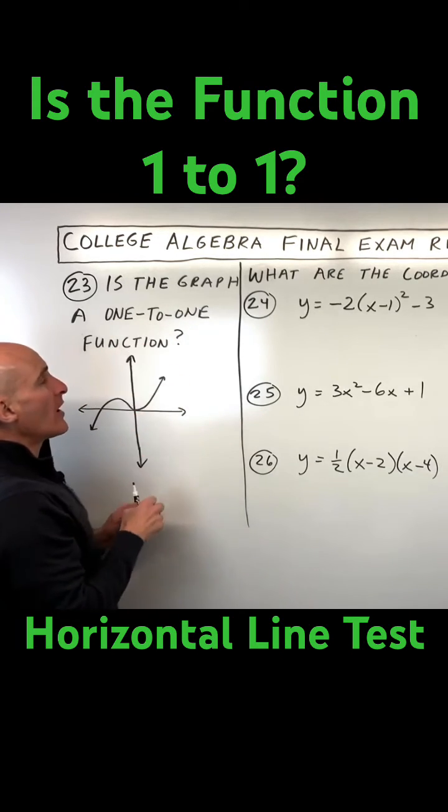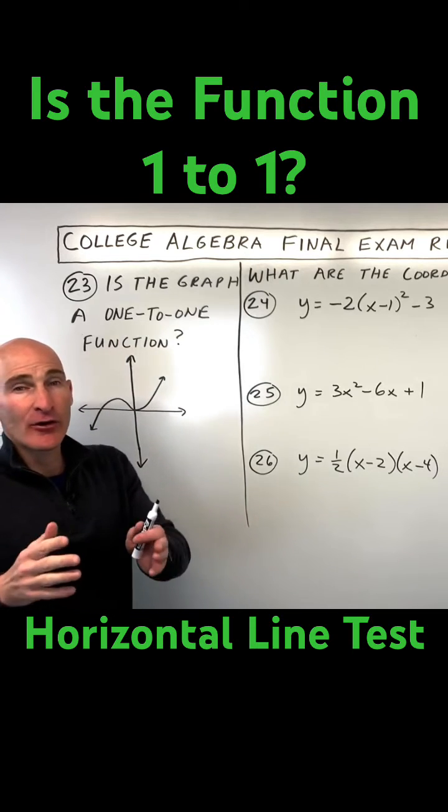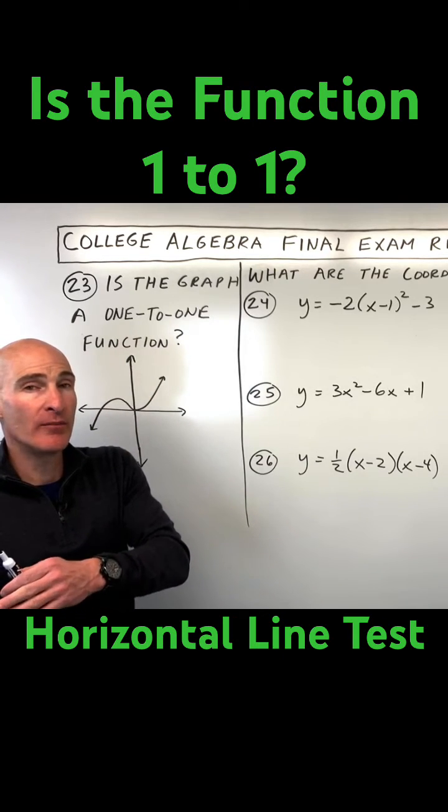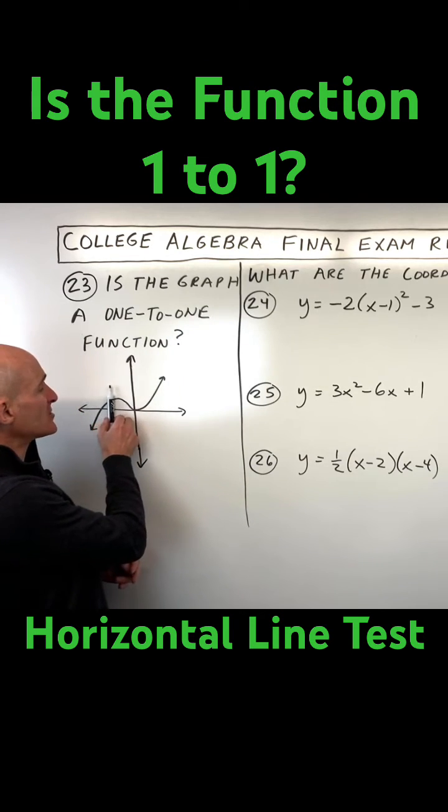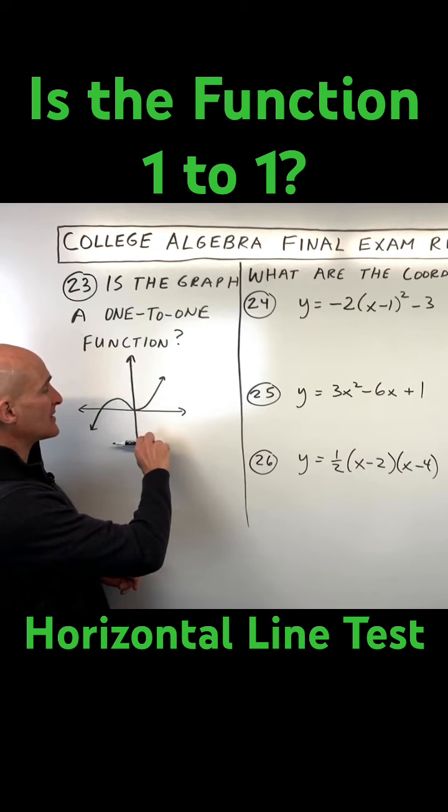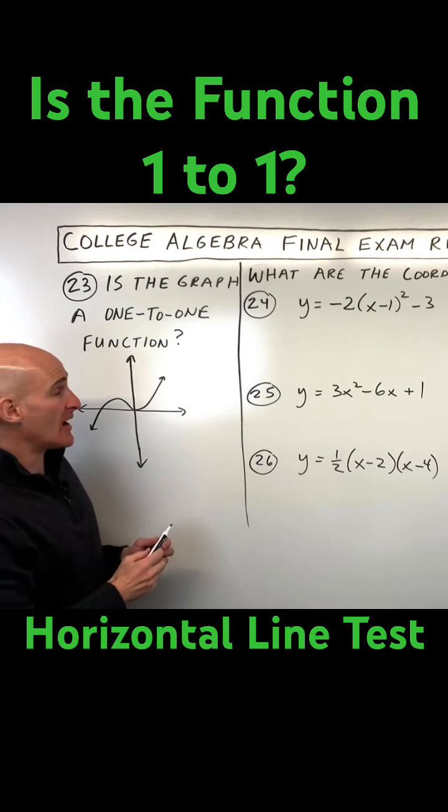So in order for it to be one-to-one, it means every x value has only one y value, but every y value has only one x value. And so the way I like to think about one-to-one functions is it has to pass the vertical line test as well as the horizontal line test.